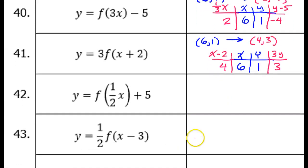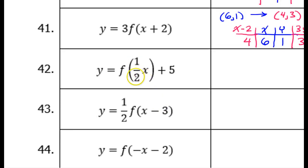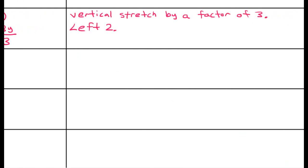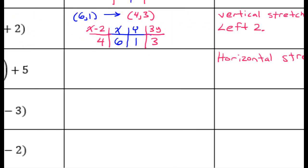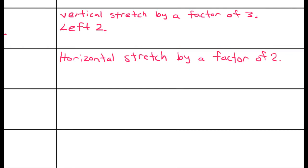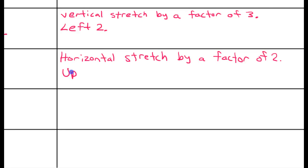Let's take a look at number 42. This 1 half on the inside of the function is going to be a horizontal stretch by a factor of 2. On the inside of the function, if the value is less than 1, it's actually going to be a stretch — everything is the opposite of the way it looks. In the front it's a vertical stretch or compression; on the inside it's horizontal. So horizontal stretch by a factor of 2. And this plus 5 on the end is going to be up 5.